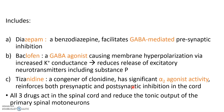All three drugs — diazepam, baclofen, and tizanidine — act in the spinal cord and reduce the tonic output of the primary spinal motor neurons. Reducing tonic output leads to a reduction in spasm.